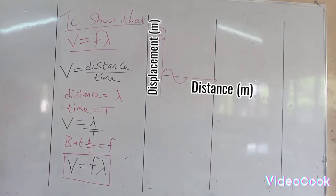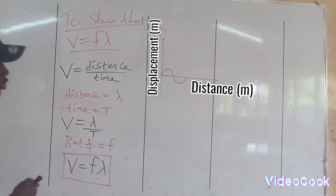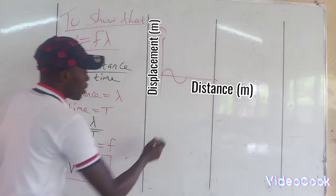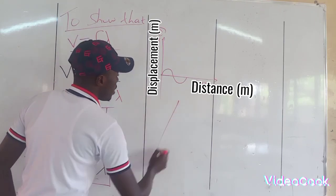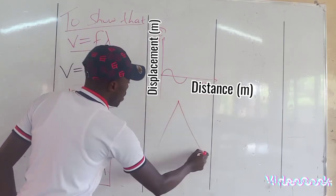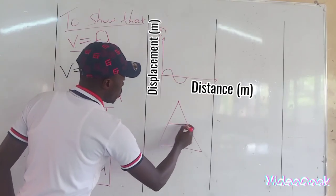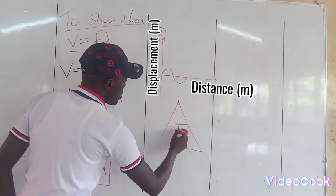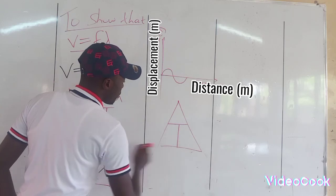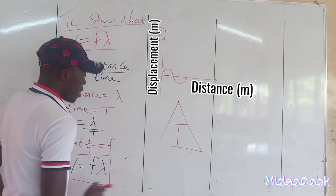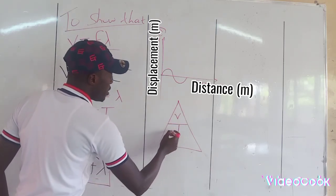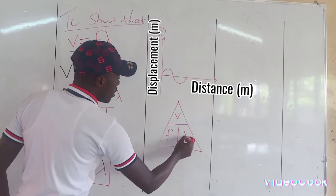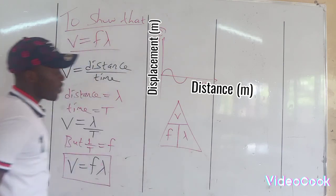It is also important to note that if you have this equation, you can also have a triangle with v, f, and lambda inside, whereby velocity equals frequency times wavelength.